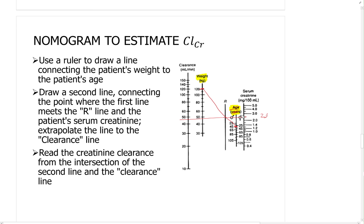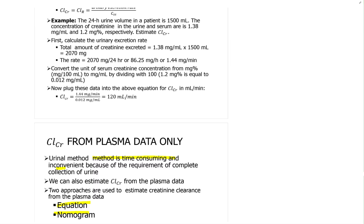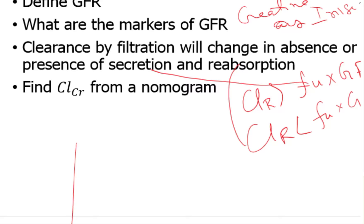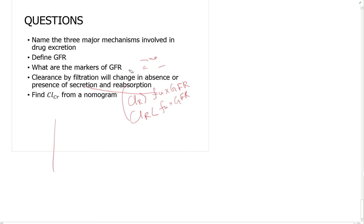Define a nomogram: there are three curves. You use a ruler to draw a line connecting the patient's weight to the patient's age, and this will intersect the R line — then you extrapolate from there to get the creatinine clearance. I hope this helps. These are very straightforward, simple things you have to remember. Especially if you understand this, you should be fine for tomorrow's quiz. I will go over the material again in class with different calculations. Thank you.